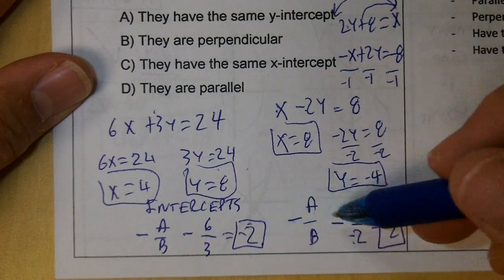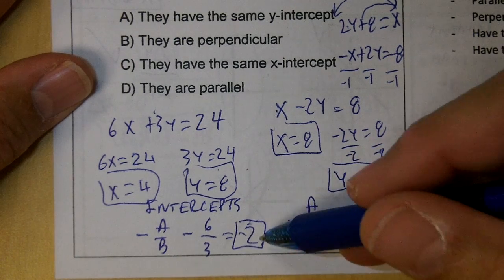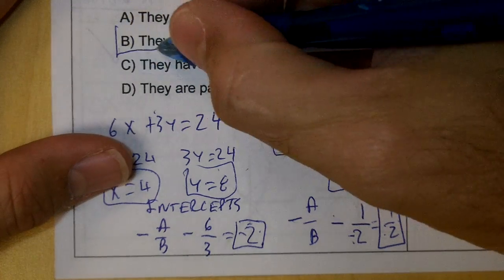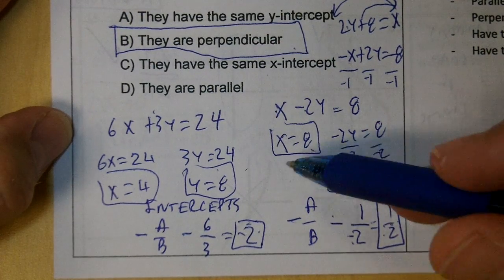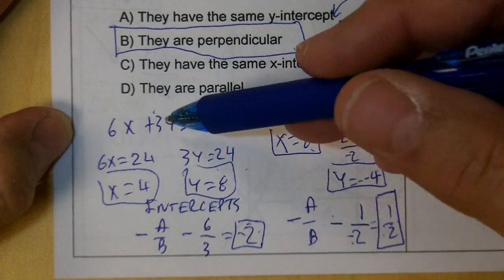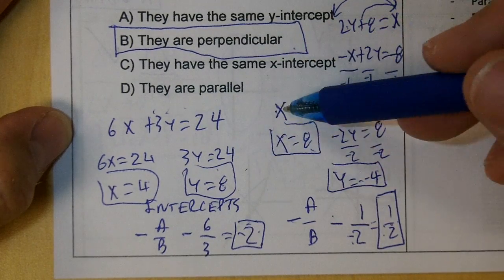These slopes are negative reciprocals, aren't they? If they're negative reciprocals, the lines are what? Perpendicular. So the lines are perpendicular, but they do not share the same intercepts. And to get the intercepts, you need the lines in standard form.